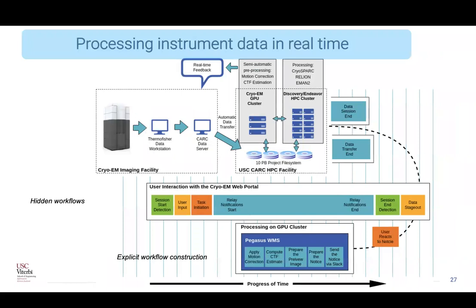Another recent development is integration of instruments into the workflow for automatic data analysis. This is a cryo-EM facility at USC where scientists conduct experiments. Data is pushed to the HPC system on campus, then automatically picked up by Pegasus, which does quick analysis on the data — generating images of what's happening on the microscope — and sends Slack notifications to users while they're running the experiment. If the user needs to change anything during the experiment, they can quickly do so, making experimentation much more efficient. Traditionally, you took the data, went home, and analyzed it.